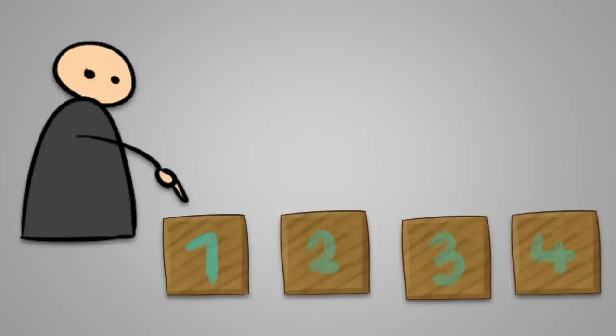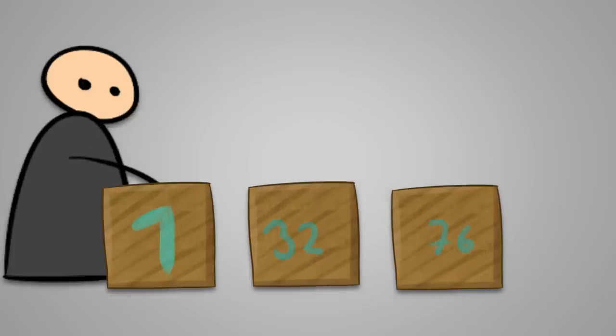Once the first prisoner enters the room, he will open box 1. If this box does not contain his name, he will go to the box with a number associated with the prisoner's name that was in the first box and open it.